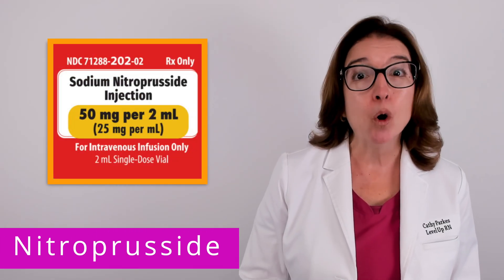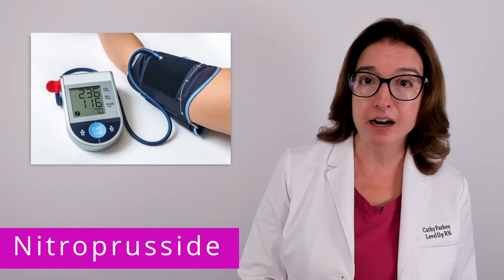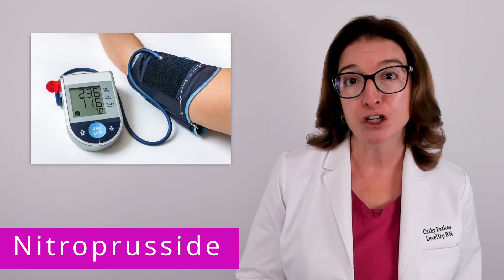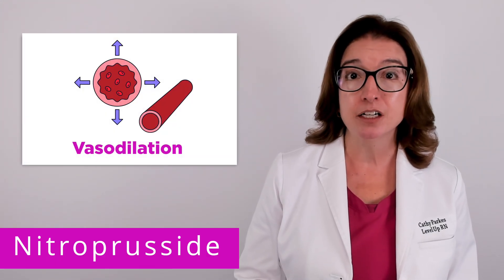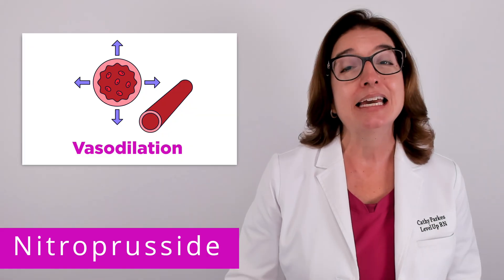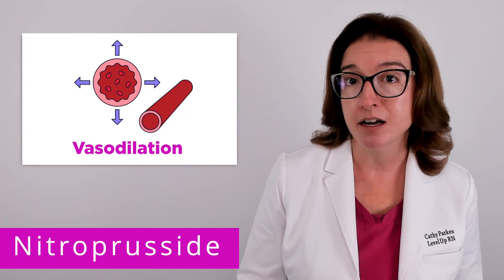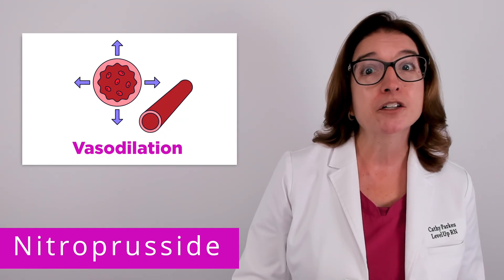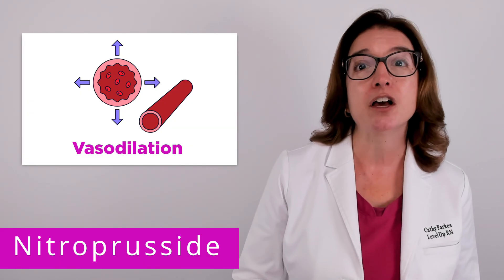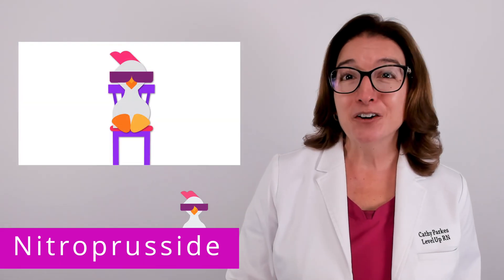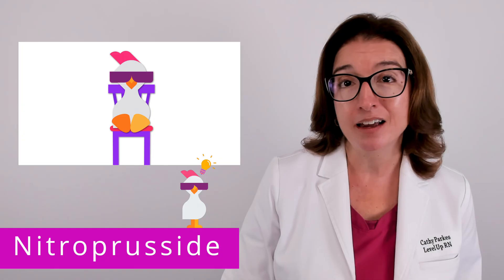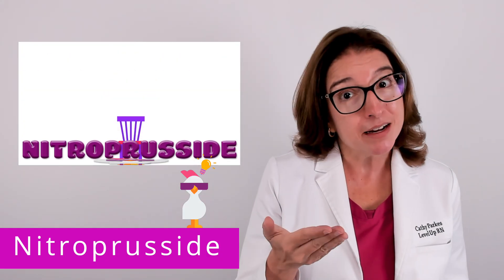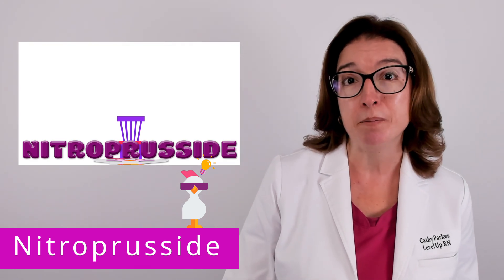Nitroprusside is a potent vasodilator that is used to treat severe hypertension and a hypertensive crisis. It rapidly brings down a patient's blood pressure by causing vasodilation of both the arteries and the veins. It does this by causing the release of nitric oxide, which leads to the relaxation of the vascular smooth muscle, causing a reduction in both arterial and venous pressure. Our cool chicken hint to help you remember what this medication does is to think nitroprusside might press you into the ground when your blood pressure rapidly decreases.